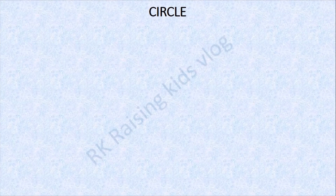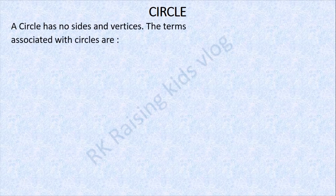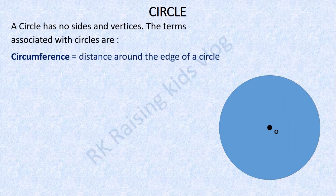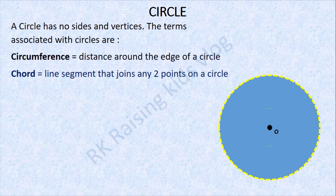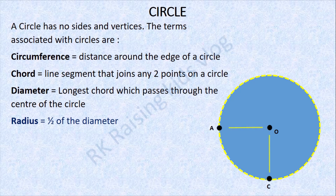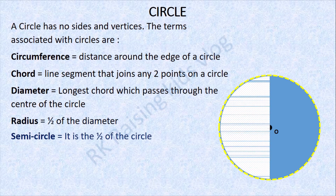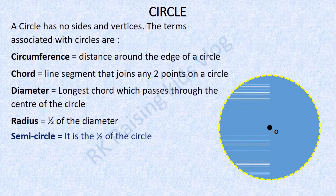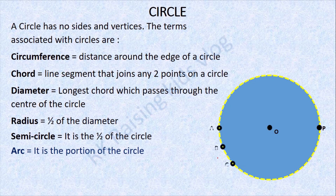Next: circle. A circle has no sides or vertices. The terms associated with circles are: circumference — the distance around the edge of the circle; chord — a line segment that joins any two points on a circle; diameter — the longest chord which passes through the center of a circle; radius — the half of a diameter; semicircle — the half of the circle; and arc — a portion of the circle.